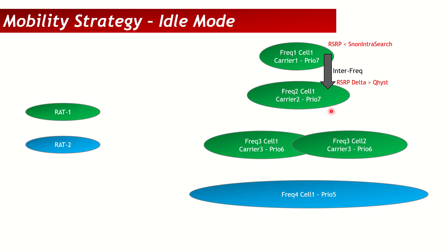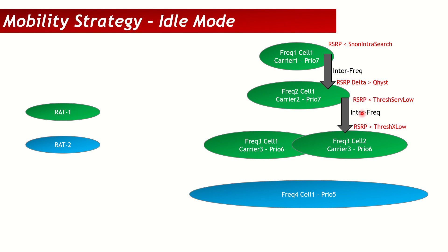When moving to a lower priority frequency, different parameters apply. For a higher-to-lower priority inter-frequency reselection, two conditions must be fulfilled: the RSRP of the serving cell must be below threshold-serving-low, while the RSRP of the target cell must be above threshold-x-low. Only when both conditions are met will the user move from the higher priority frequency to the lower priority one.